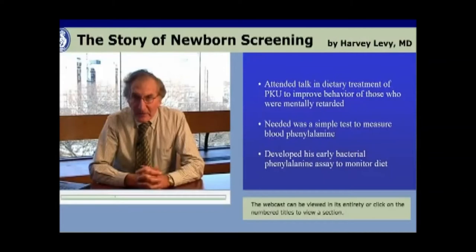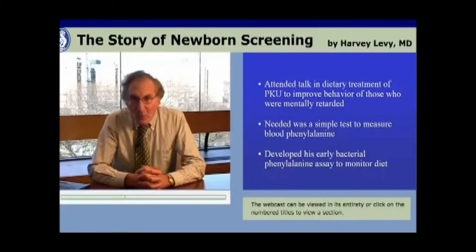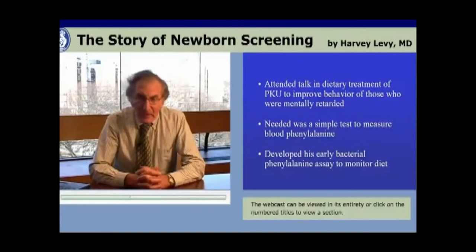In relation to that interest, Guthrie was the program chairman for the local Association for Retarded Children in Buffalo, New York, and it was his responsibility to develop a monthly program. One day he heard about Dr. Robert Warner, director of the Developmental Evaluation Clinic at Buffalo Children's Hospital, and the work Warner was doing in the prevention or amelioration of mental retardation through diet. So he asked Dr. Warner to speak before the group.